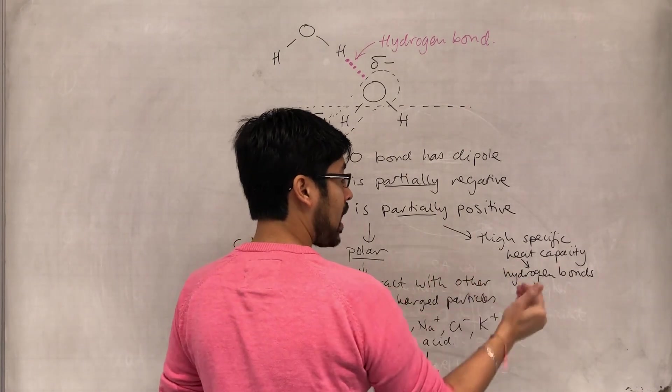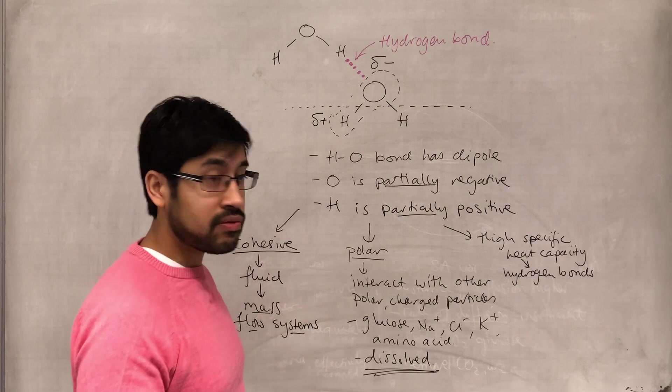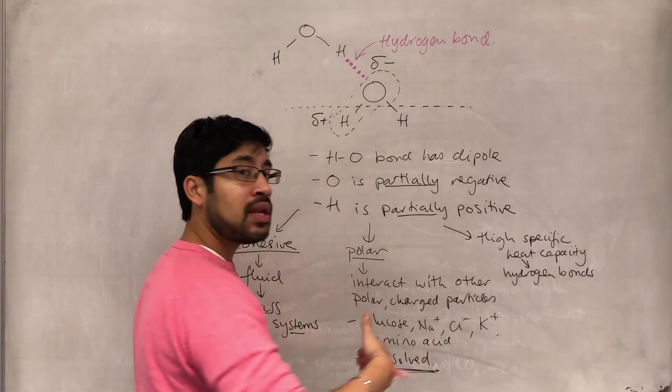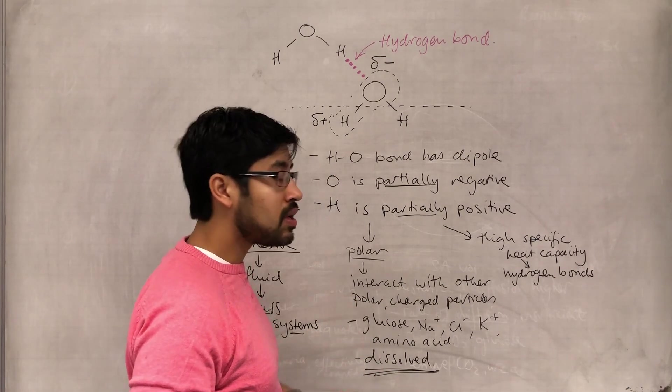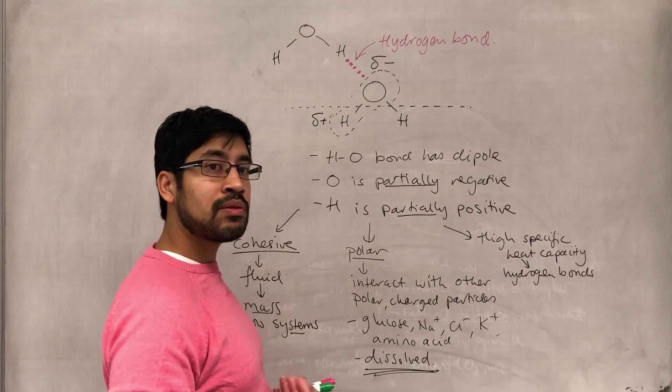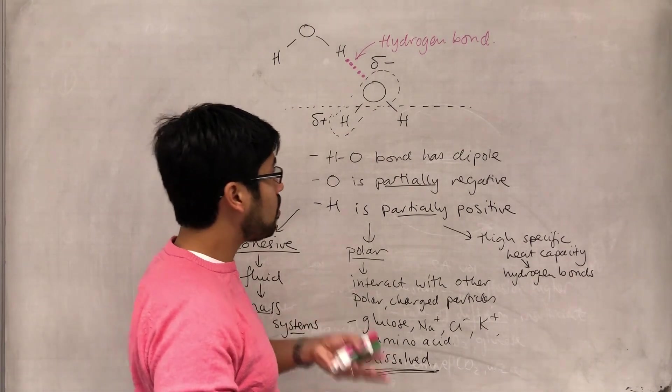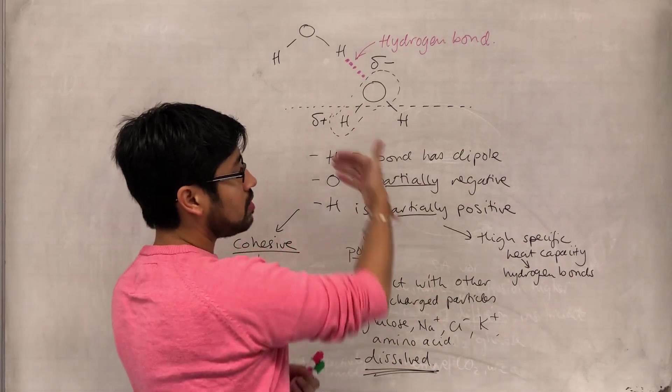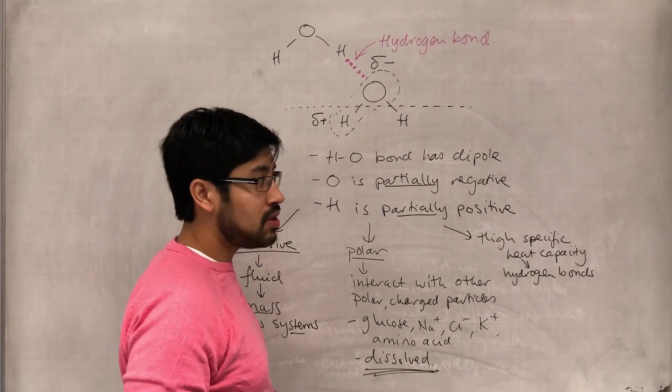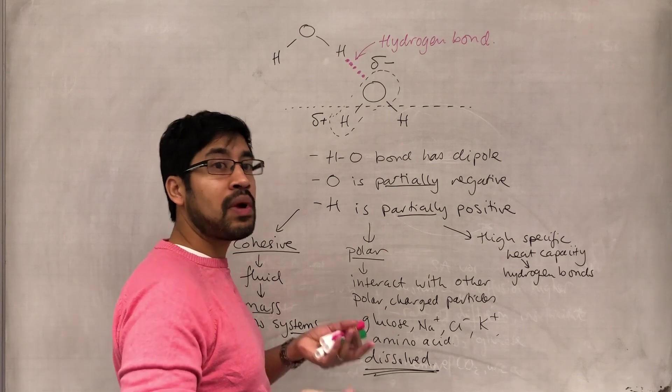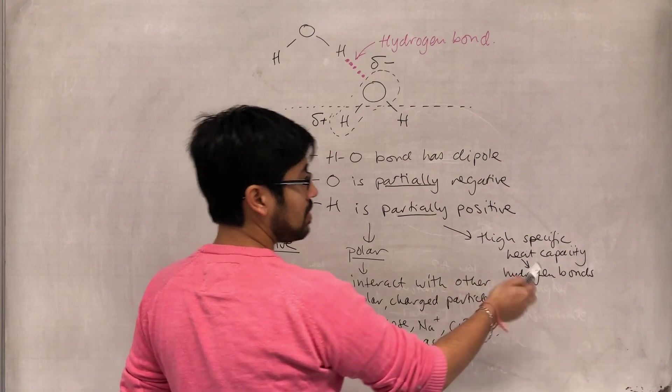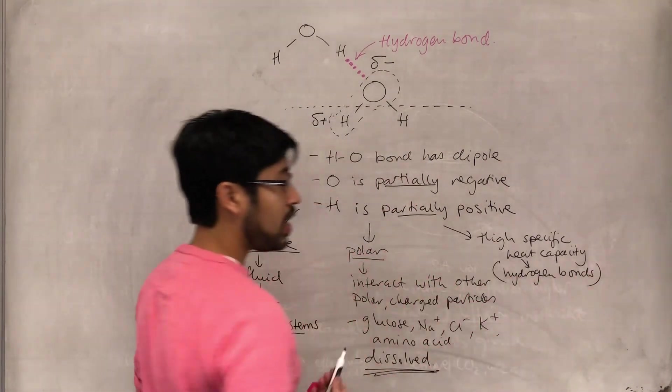So it takes a lot of energy to change the temperature of water. And what that means is, any organism that has a lot of water, and that's most of them or all of them, has got a more stable temperature thanks to that property of water. So the temperature of an organism doesn't fluctuate too much because water is kind of absorbing a lot of the energy from the atmosphere and preventing dramatic temperature changes because of that.